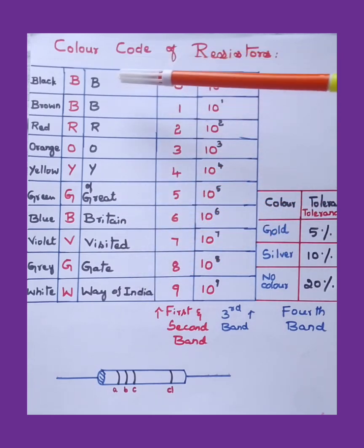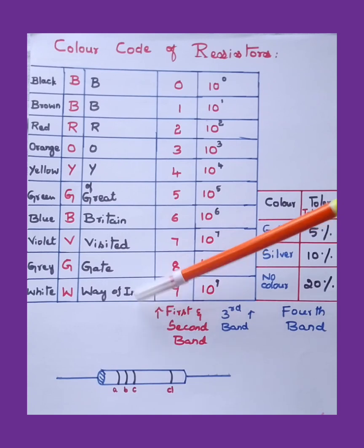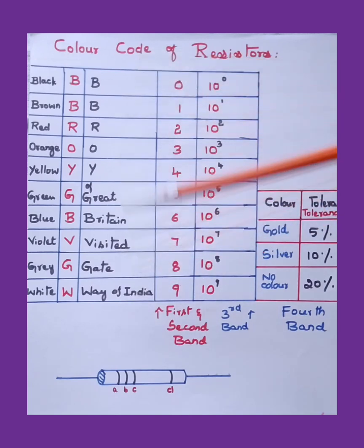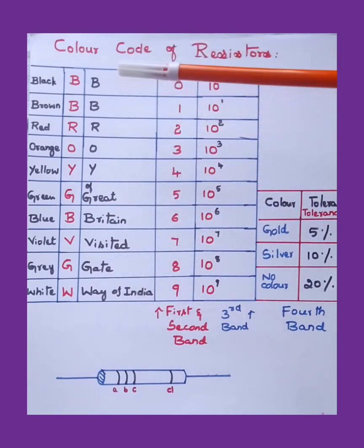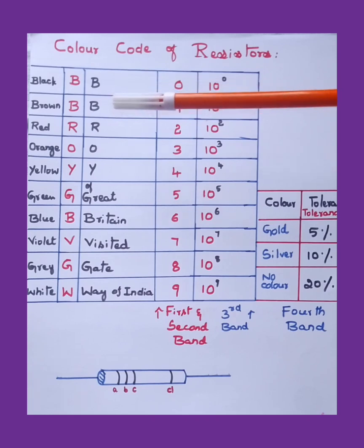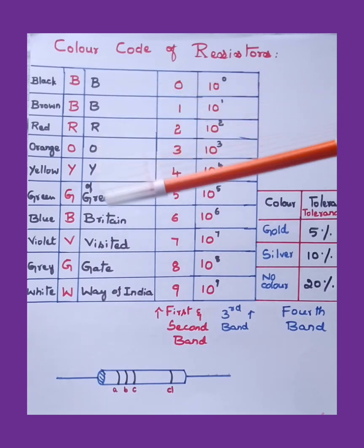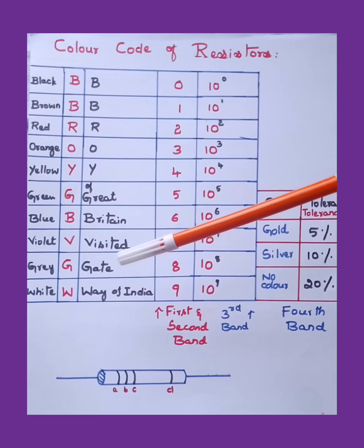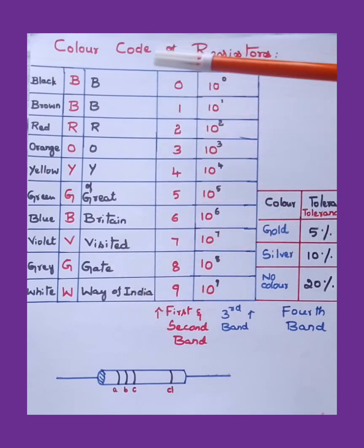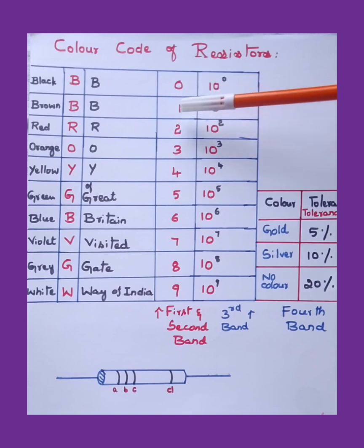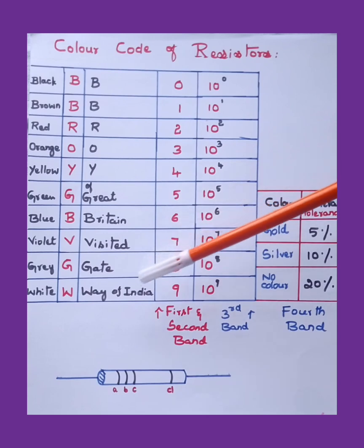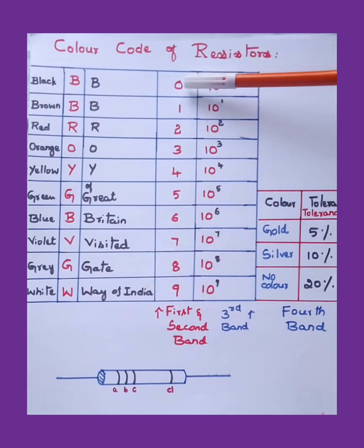You can remember in this way: BB ROY of Great Britain Visited Gateway of India. So the values are given: it starts from black and ends with white. Black and white on either ends. Then black, a little lighter becomes brown, then becomes red, orange, yellow, green, blue, violet, then gray, and then goes to white.